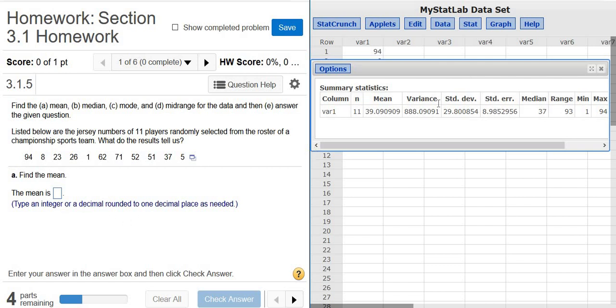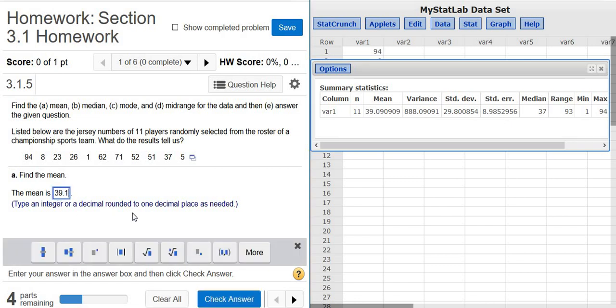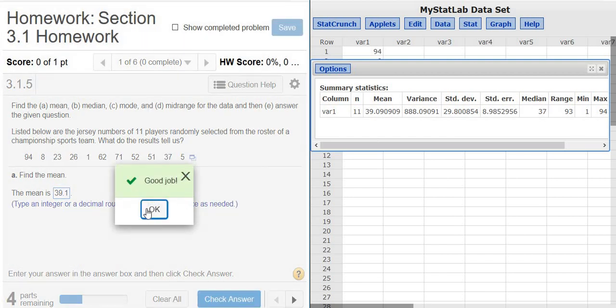The mean, it wants one decimal for the mean. Be really careful with the rounding directions. 39.1, because it's .09, so if we round it, we get .1. Let's try it. Good stuff.